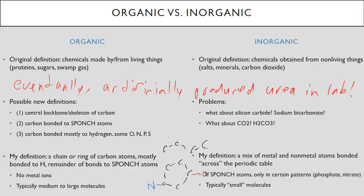So what would inorganic compounds be? Typically a mix of metal and non-metal atoms. If you look at a chemical formula and you notice that it's bonding things kind of across the periodic table that's usually a good sign that it's inorganic. If it contains those SPONCH atoms they're only in certain patterns. Phosphate PO4 or nitrate NO3. And typically these are going to be very small molecules, only a handful of atoms, not the very large structures that you see in organic chemicals.